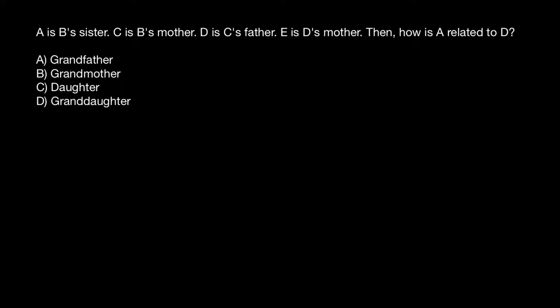A is B's sister, C is B's mother, D is C's father, E is D's mother. Then how is A related to D?